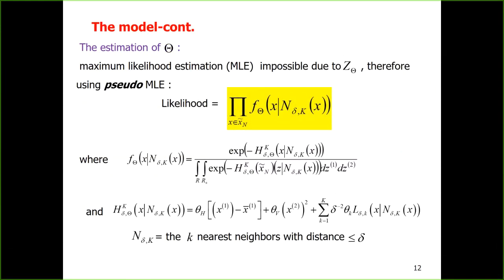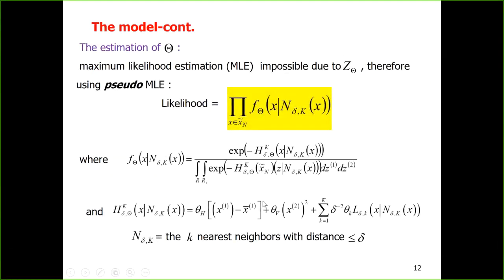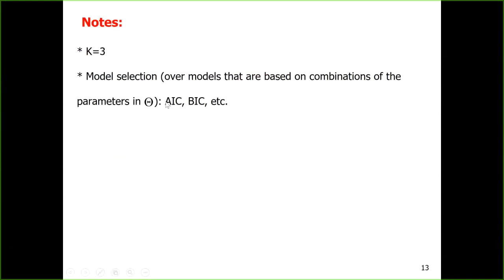The question is what value of k to use. From simulations, we found that k equals 3 is sufficient. Additionally, regarding model selection: we can fit the full Hamiltonian with five parameters, but instead we consider a family of models with different combinations of theta — for example, theta_h and theta_v as one model, or theta_v, theta_h, etc. We choose the best model using AIC and BIC, which are standard measures for model selection.